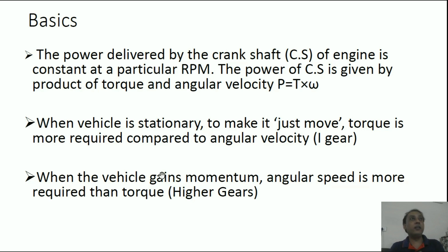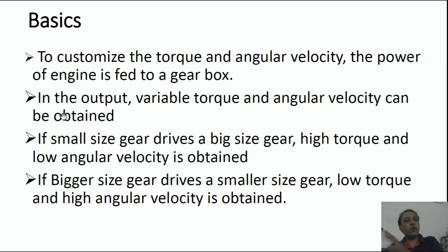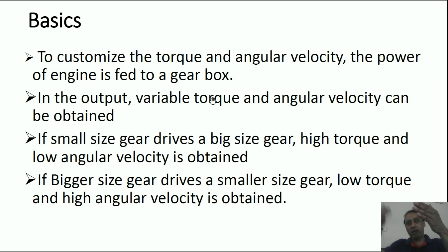For example, in the final gear, the speed of the vehicle is high, however there is not that much torque on the wheels. Now, to customize the torque and angular velocity, a gearbox is used. The power of the engine is fed to a gearbox, and at the output, by shifting the gear, you can change the torque and omega — either gain higher torque and reduce omega, or lower torque and higher omega.